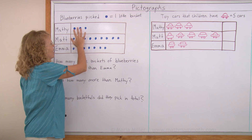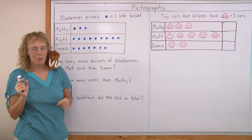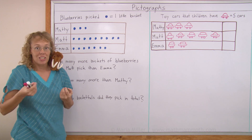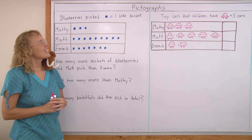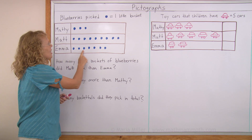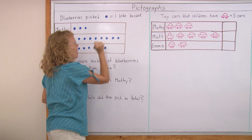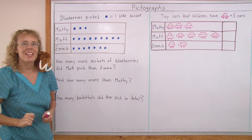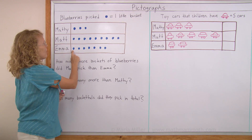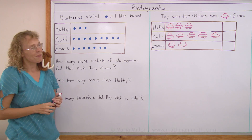Pictographs are graphs like this, where there are little pictures and each picture means a certain amount of things. For example, in this pictograph, each blueberry means one little bucket. This pictograph tells us how many bucketfuls of blueberries these children picked.